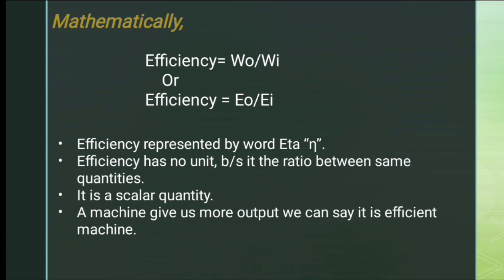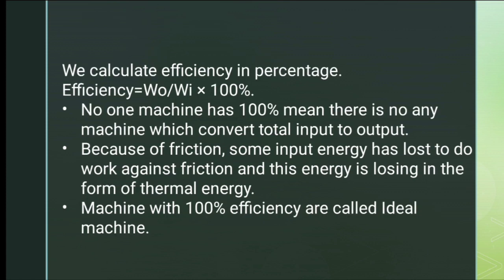If a machine gives us more useful output compared to its input, we can say it is an efficient machine or a good machine. A machine that produces a high proportion of useful output relative to the input is considered efficient.